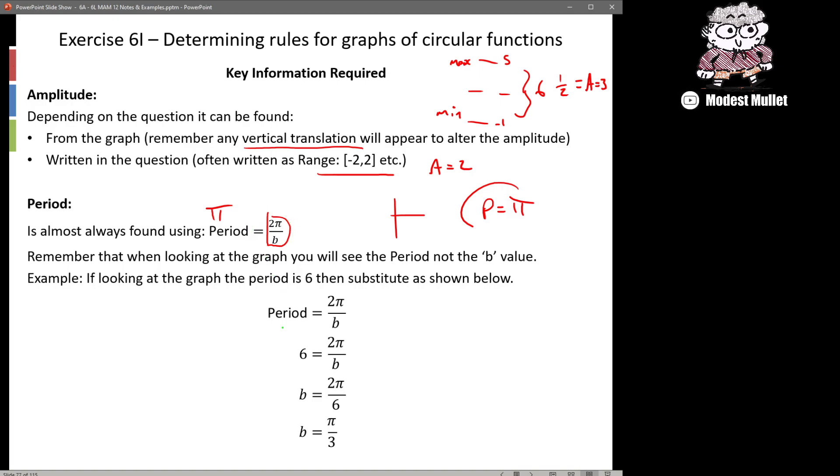So for this example here, what if we're told the period is 6? Well we can substitute that in so we're putting in 6 as the period and then we just solve to get b and it turns out b is π/3. So π/3 is what you actually use in the equation. Just a reminder there that they are directly related to each other but they're not the same.